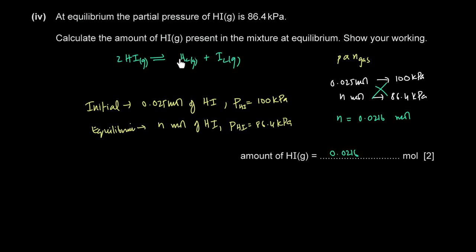This can also be done using initial amount, change, and equilibrium amounts, but comparing partial pressures is simpler since pressure is proportional to moles at constant temperature. Note: the final total pressure is not 86.4 kPa because H₂ and I₂ are also present. 86.4 kPa is just the partial pressure of HI, not the total pressure at equilibrium.